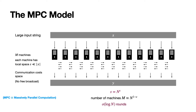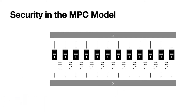Finally, we say that a distributed algorithm, or a protocol, is efficient in this model if it has much less than log n rounds. For the rest of this talk, I'm going to refer to an MPC algorithm as an MPC protocol, and I'm going to refer to each machine as a party, since this is a crypto talk.